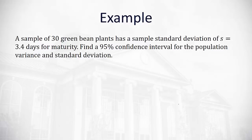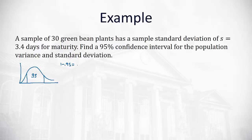Let's look at an example. We have 30 green bean plants with a sample standard deviation of 3.4 days for maturity. We're going to find a 95% confidence interval for both the variance and the standard deviation. First, we draw a picture. A 95% confidence interval means 0.95 in the middle, so 0.05 is split between the two tails — giving 0.025 in each tail.